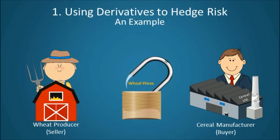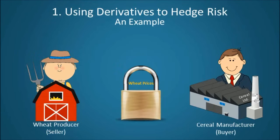So in this example, a forward contract was used by both wheat sellers and wheat buyers in an effort to hedge price risk by locking in the price of wheat. We will discuss forward contracts in greater detail in another video, but what is most important to take away from this example is that derivatives can be used to hedge risk.